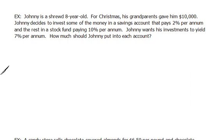This problem is a word problem that is dealing with mixing some items. So let's look at this. This says Johnny is a shrewd eight-year-old. For Christmas his grandparents gave him $10,000. Johnny decides to invest some of the money in a savings account that pays 2% per annum and the rest in a stock fund paying 10% per annum. Johnny wants his investments to yield 7% per annum. How much should Johnny put into each account?